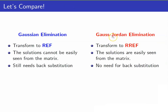Let's compare Gaussian elimination and Gauss-Jordan elimination. For Gaussian elimination, we transform the augmented matrix to row echelon form, whereas for Gauss-Jordan elimination, we transform it into its reduced row echelon form. For Gaussian elimination, the solutions cannot be easily seen from the matrix because we still need to use back substitution, whereas for Gauss-Jordan elimination, the solutions are easily seen from the matrix and there is no need for back substitution. In our next lesson, we are going to describe the solutions of systems of linear equations.